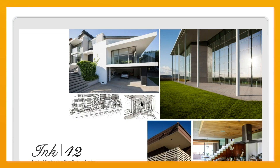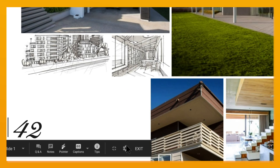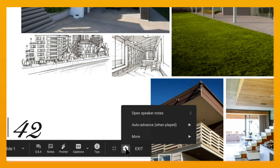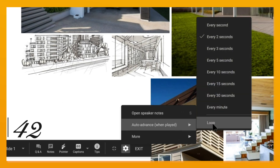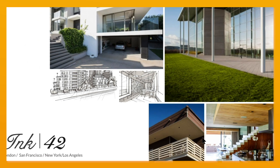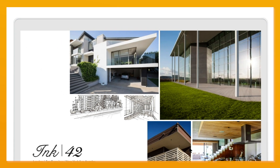In present mode, go to Settings, then Auto-Advance, and choose your timing interval or loop setting. Your slides will auto-advance based on your selection and/or loop at the end of the presentation.